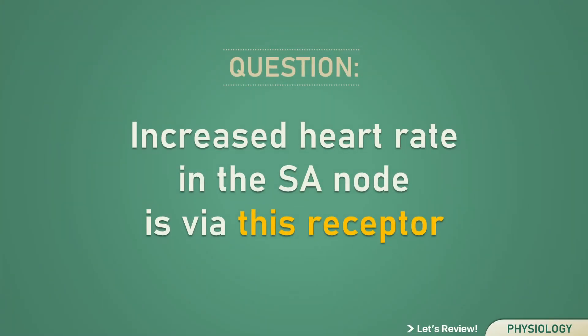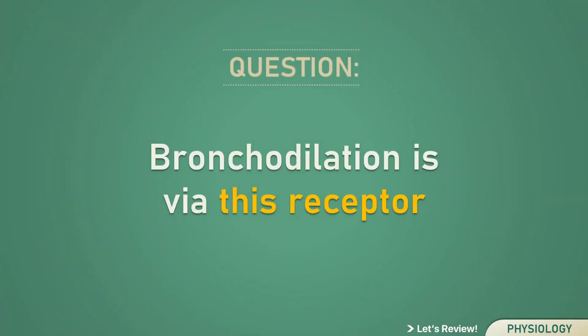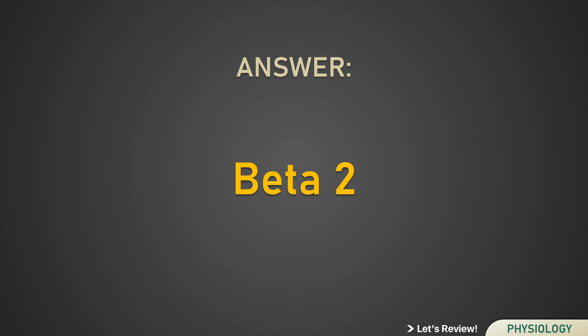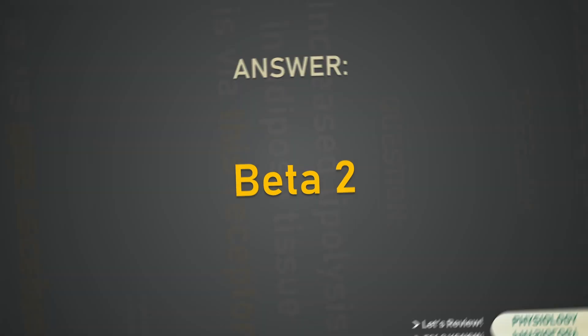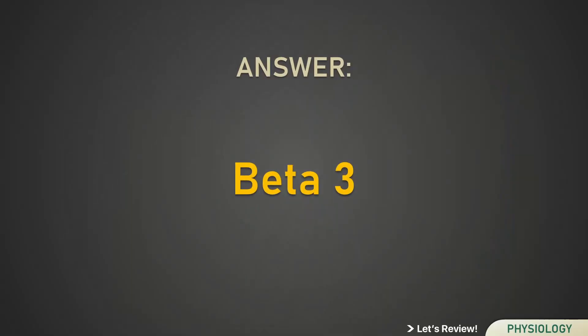Increased heart rate in the SA node is via this receptor: Beta 1. Bronchodilation is via this receptor: Beta 2. Increased lipolysis in adipose tissue is via this receptor: Beta 3.